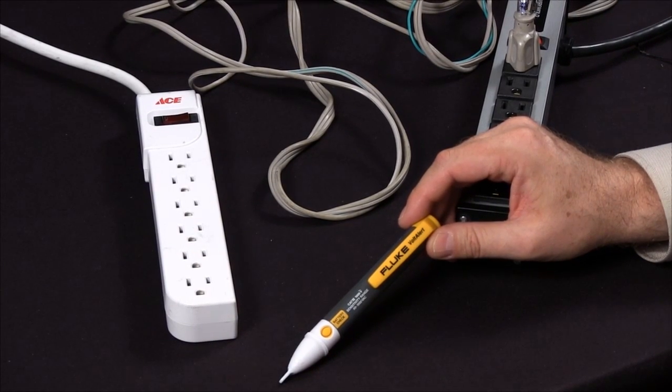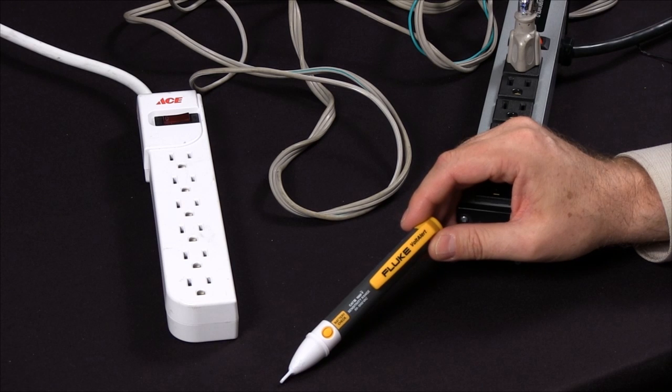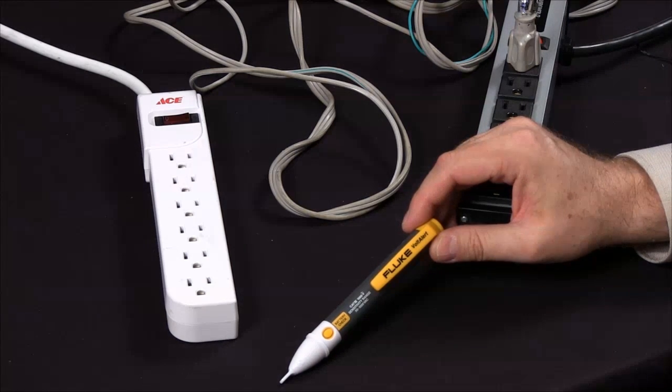How do I find an open circuit using the Fluke 2AC Pocket Volt Detector? There are several tests you can make.